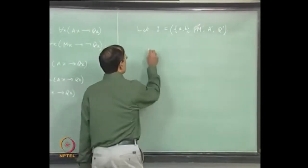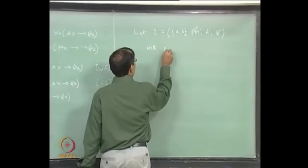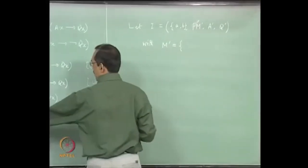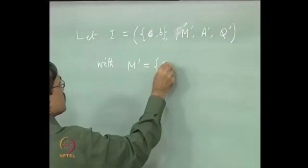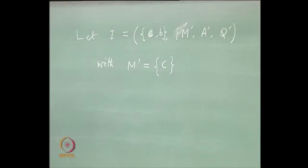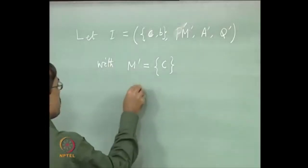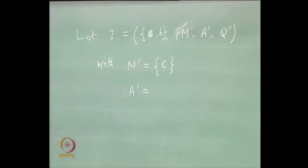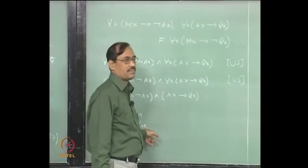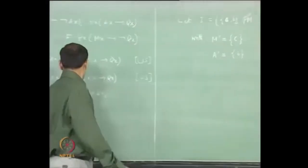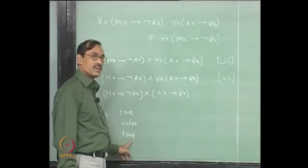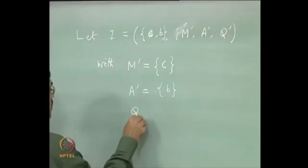Let I be equal to (D, φ), where D is {A, B}. We want M, A, and Q — all these are required. One interpretation is enough because all these are sentences — there is no free variable in either the premises or the conclusion. I just give one interpretation which will falsify it. We take M′ at C to be true — C here. A′ at C should be false; C should not belong to A′, so I take only B. And Q(C) should be true, so Q′ equals {C} again.